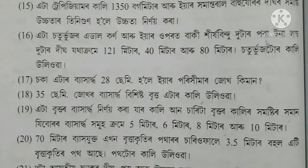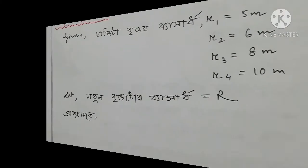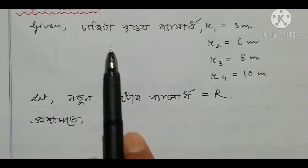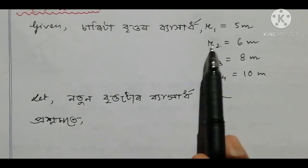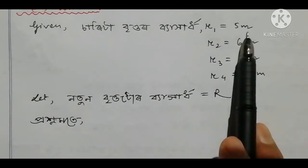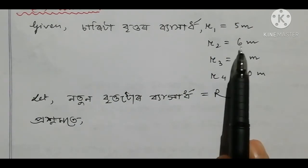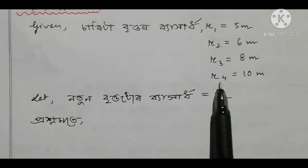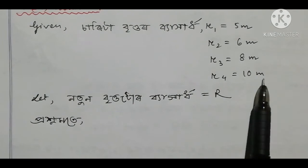The answer is question number 19. The first question is, the answer is 5m, 6m, 6m, 8m, 10m.